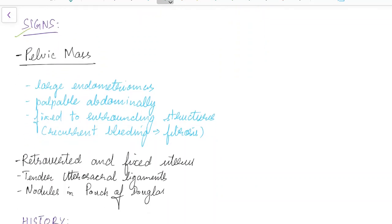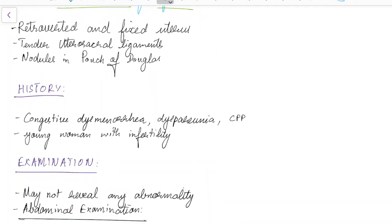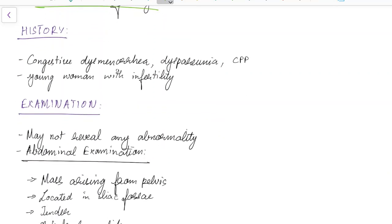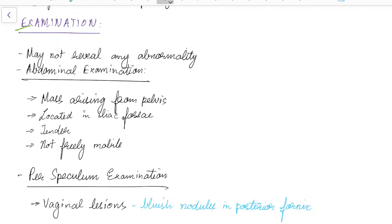Signs of endometriosis include a pelvic mass seen in large endometriomas, which may be palpable abdominally and are fixed to surrounding structures due to recurrent bleeding leading to fibrosis. A patient typically presents with a history of congestive dysmenorrhea, dyspareunia, and chronic pelvic pain — usually a young woman with infertility. Examination may reveal a mass arising from the pelvis located in the iliac fossa, which is tender and not freely mobile.